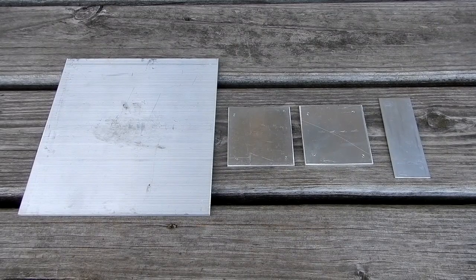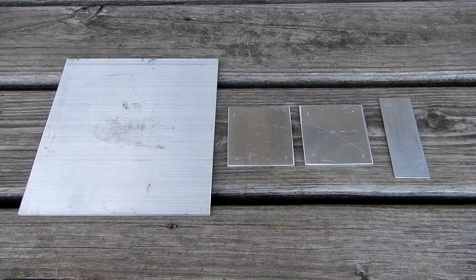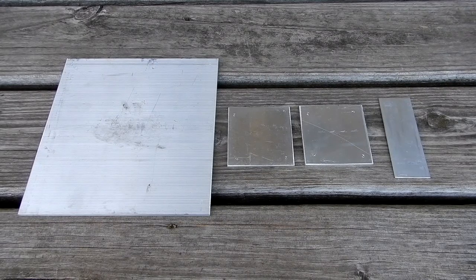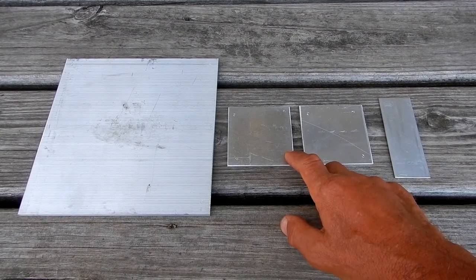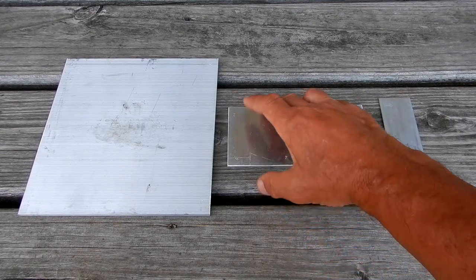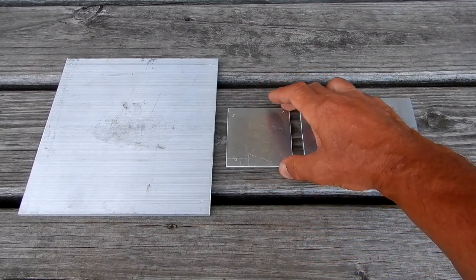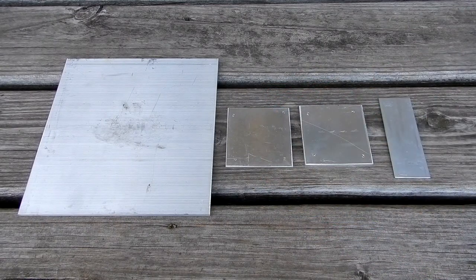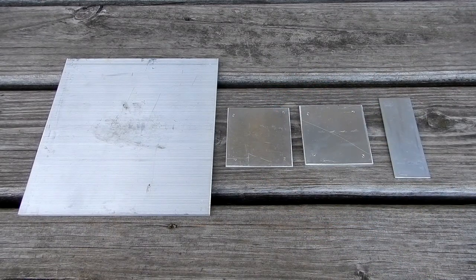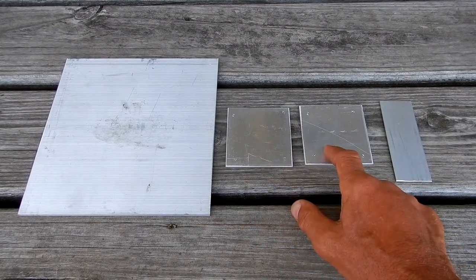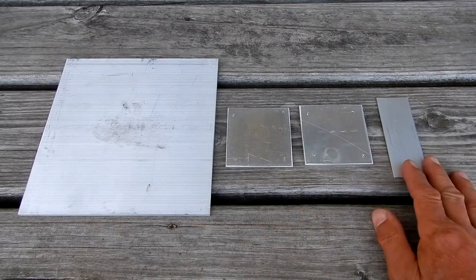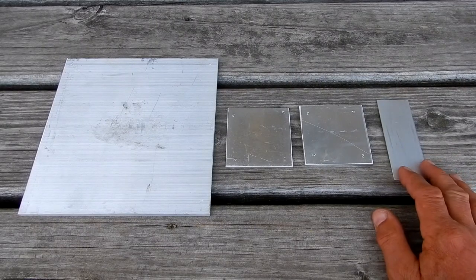This will work with an ATS and the Astrophysics EGO. These shims would be too small for a Losmandy, you'd have to get a bigger piece of aluminum to match the leg diameter. These two are three by three, this one is four inches by inch and a half wide.